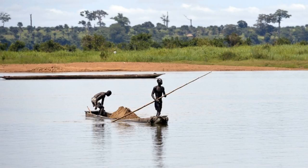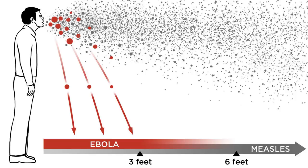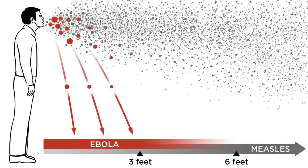The Ebola virus originated on the Ebola River in 1976, which is currently the Democratic Republic of the Congo. People infecting other people with the virus led to outbreaks in several different countries. The disease spreads through animals, mainly monkeys and apes, and of course humans.